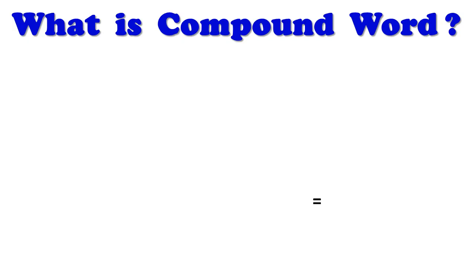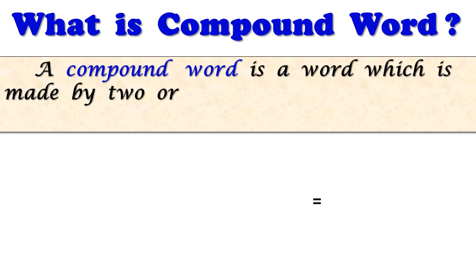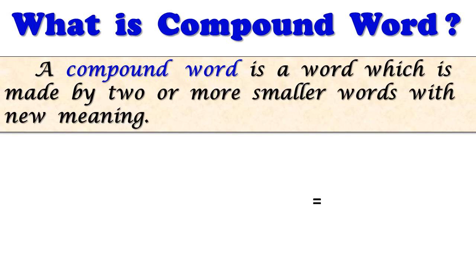What is compound word? A compound word is a word which is made by two or more smaller words with new meaning. In short, we can say that when two small words come together and create new meaningful words, that word is a compound word.